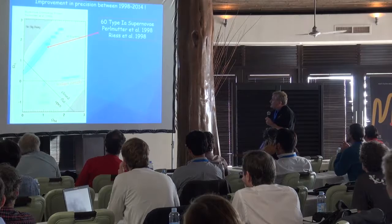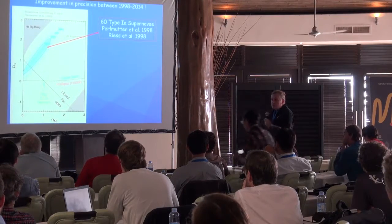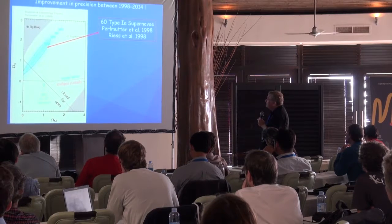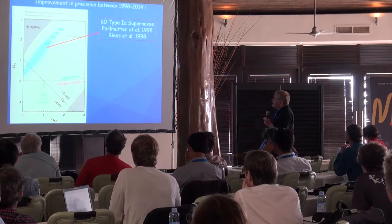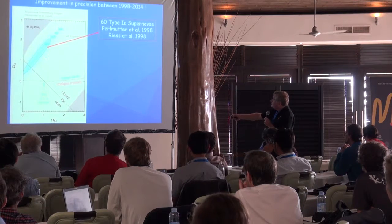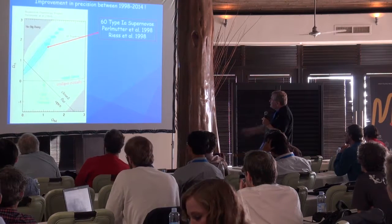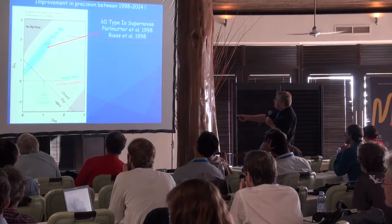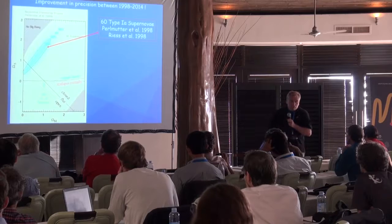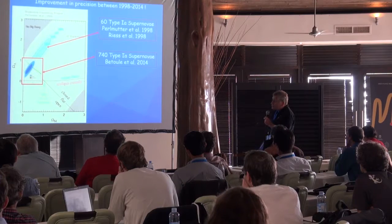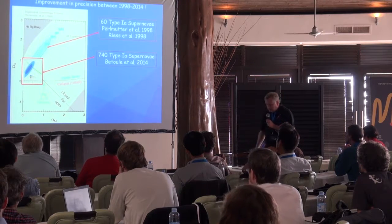You are all familiar with this plot. This is one of the two plots published in 1998 by the two groups that announced the discovery of the accelerated universe. This is the one by Perlmutter. You can see the contour levels here. This result was based on 60 supernovae. And today those contours look like this because the sample has increased by 10 times.